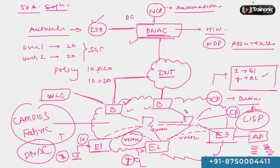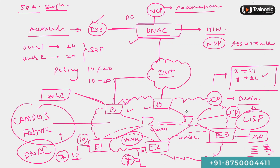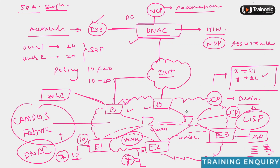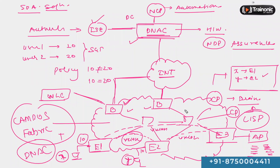We'll dive deeper into concepts like what devices can act as border devices and which devices can act as control plane devices in a later session, but the overall picture of the SDA solution is now in front of you. DNA Center is the centralized point of control for managing all LAN devices in a campus fabric.